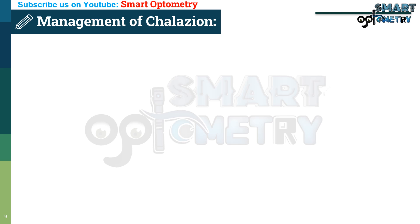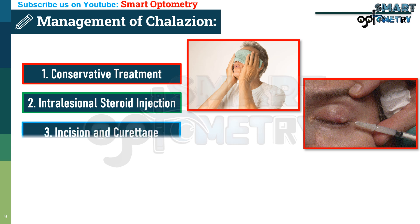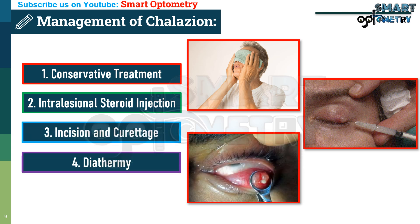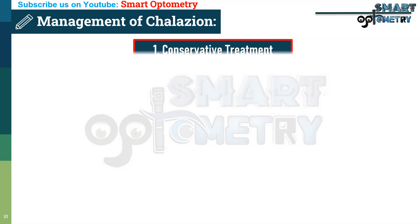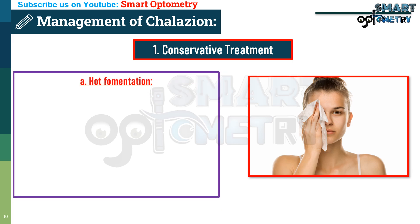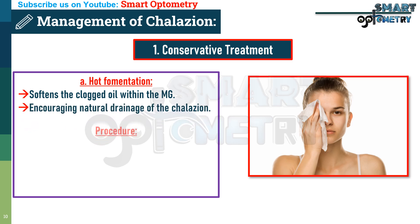What is the treatment of chalazion? Treatment can be divided into four categories: conservative treatment, intralesional steroid injection, incision and curettage, and diathermy. For small, recent, and soft chalazia, conservative treatment may promote self-resolution. Conservative treatment includes hot fomentation: hot fomentation softens the clogged oil within the meibomian gland, encouraging natural drainage of the chalazion and reducing swelling.